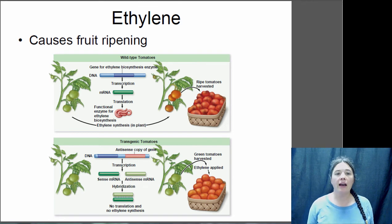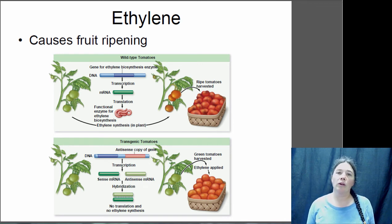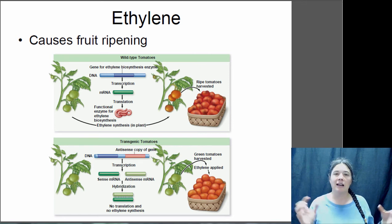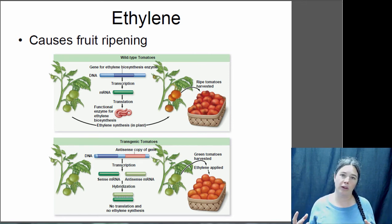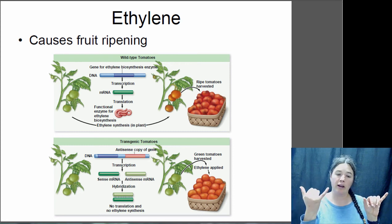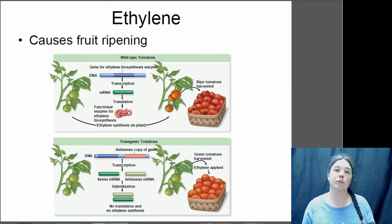Ethylene is responsible among other things for the ripening of fruit. Tomatoes growing on the plant produce ethylene, which causes them to ripen into nice red, delicious tomatoes. But when they ripen on the plant they become soft and hard to transport. Commercial tomatoes have been genetically modified by inserting a reverse copy of the ethylene-producing gene. When the RNA is transcribed, it binds to the normal RNA and prevents production of the proteins that create ethylene, so these plants essentially cannot make ethylene.